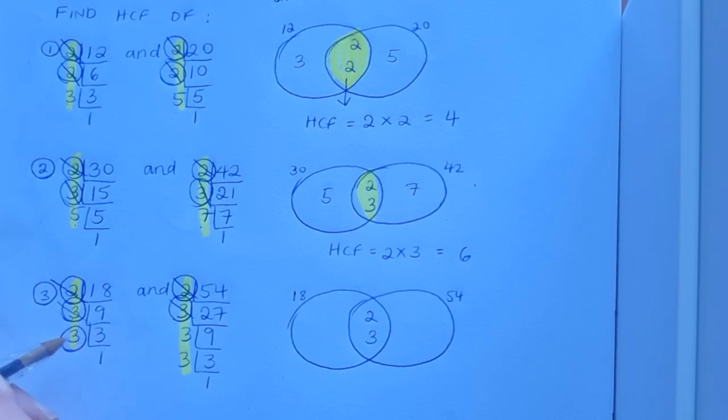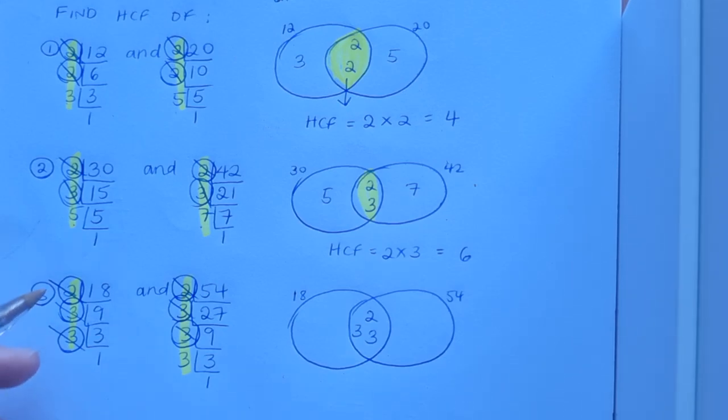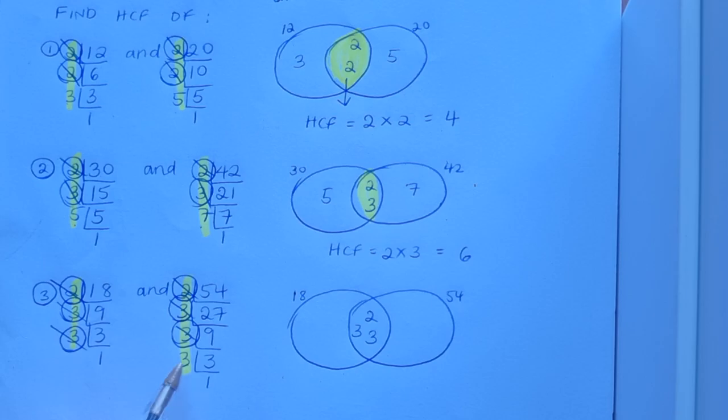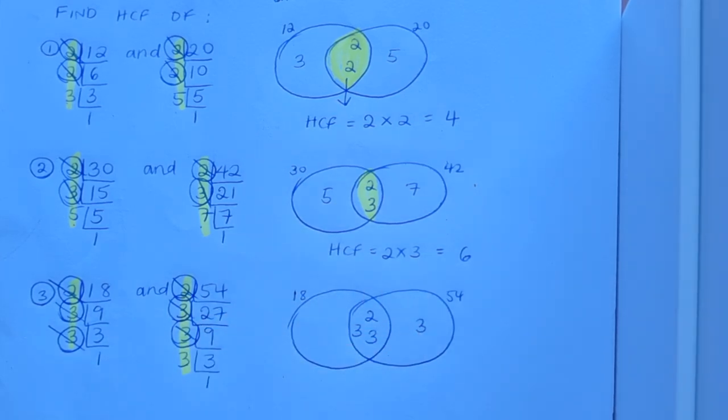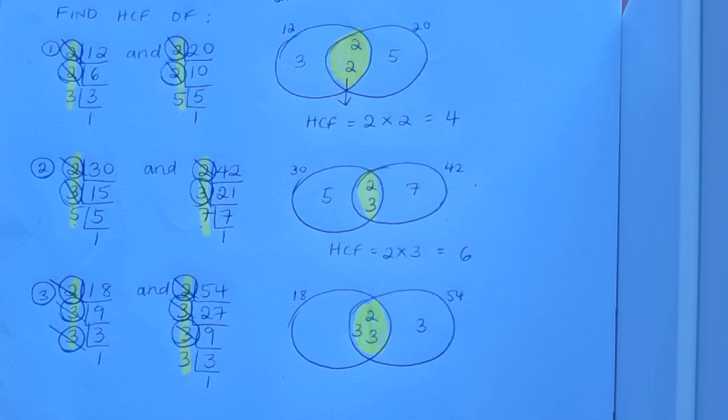Oh look I've got another one. That 3 can match up with that 3. That's a match. In they go. I have nothing else left in the 18 set. So nothing left to write in here. But I do have another 3 for the 54 set. So in that goes over there. And I'll make my HCF with the stuff in the intersection. I'll get the product of those numbers.